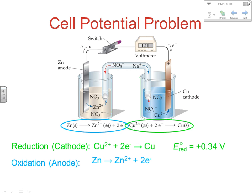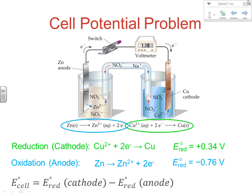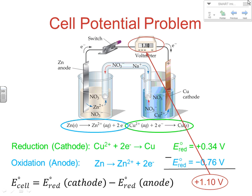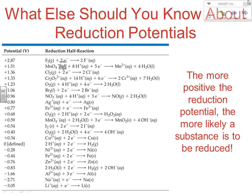Plugging into our equation — cathode minus anode — we take 0.34 minus (−0.76) and get 1.10 volts. Notice that's exactly what the voltmeter shows. Since our voltage equals the voltage under standard conditions, the solutions must be one molar at room temperature. That's how we calculate this.